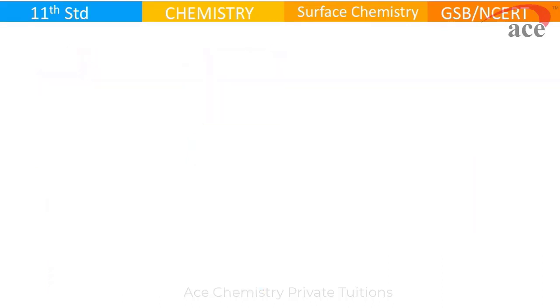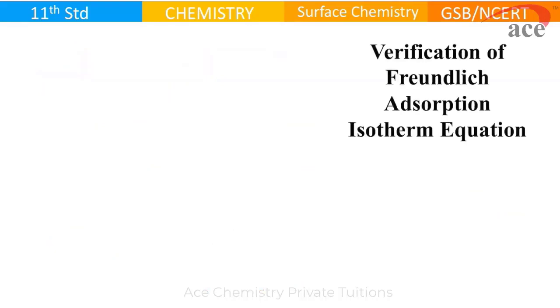Now we proceed further. We are going to verify how Freundlich adsorption isotherm equation works. x upon m is proportional to P raised to 1 by n. x by m is equal to - let's remove proportionality sign and put a constant k P raised to 1 by n.